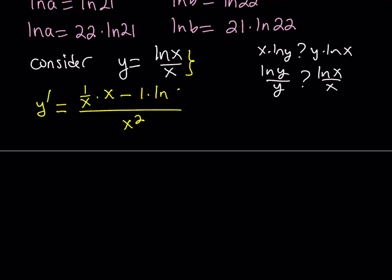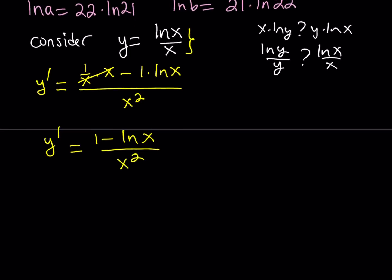So, now we have the following. Let's simplify the derivative a little bit. This is going to cancel out. This gives us 1 minus ln x divided by x squared.